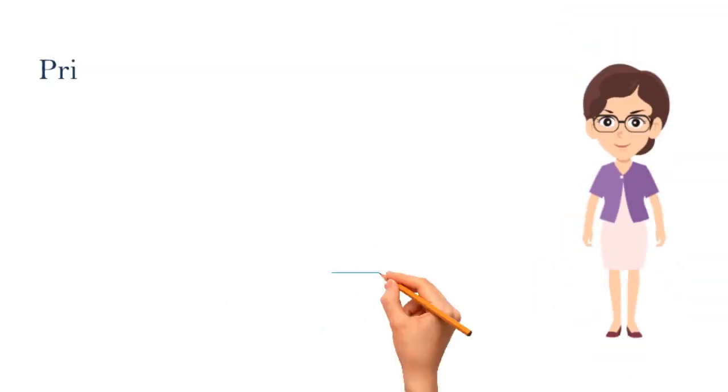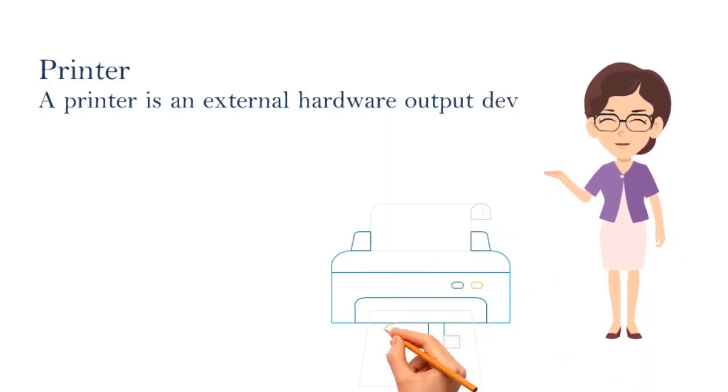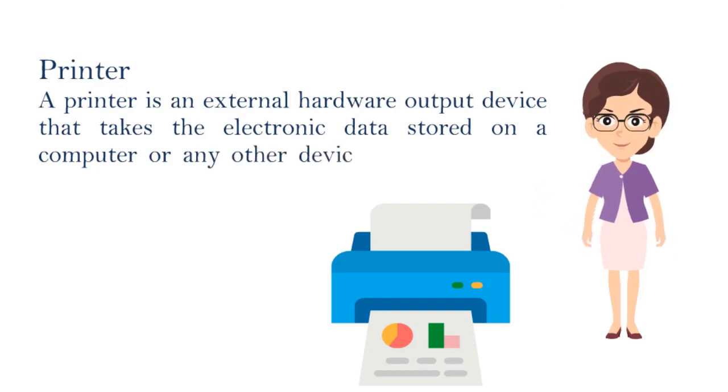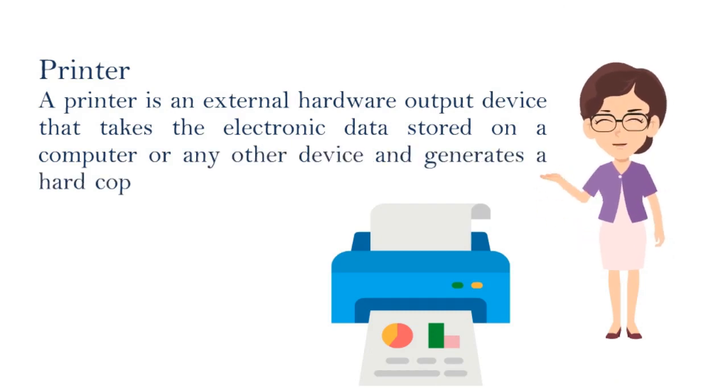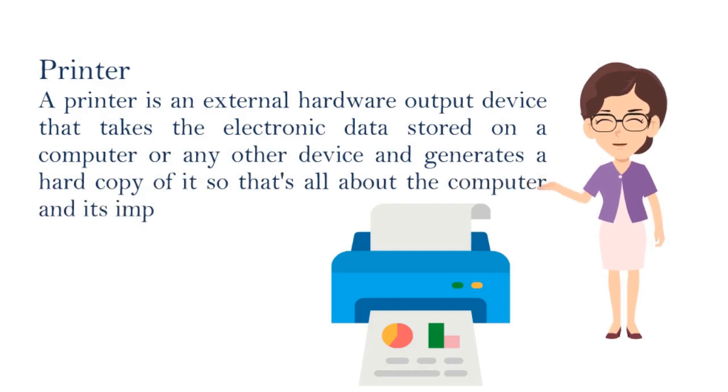Number nine: Printer. A printer is an output device that takes the electronic data stored on a computer or any other device and generates a hard copy of it. So that's all about the computer and its important parts.